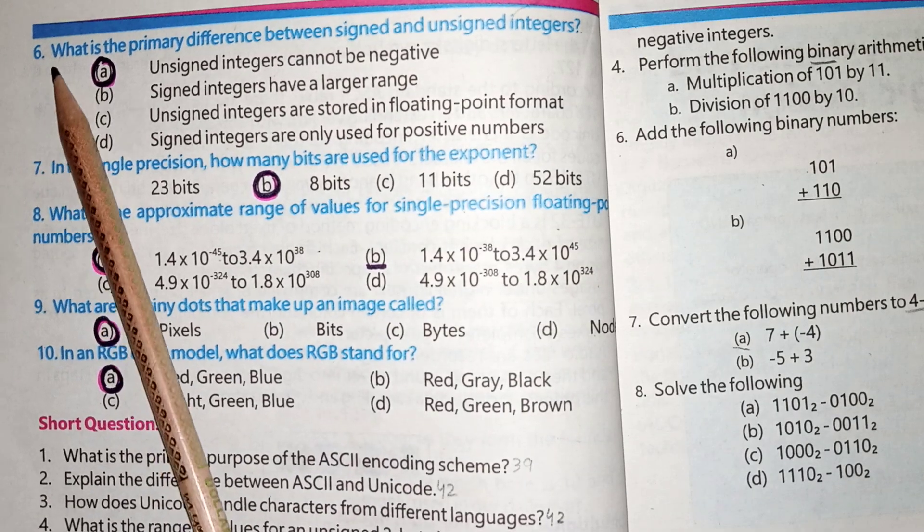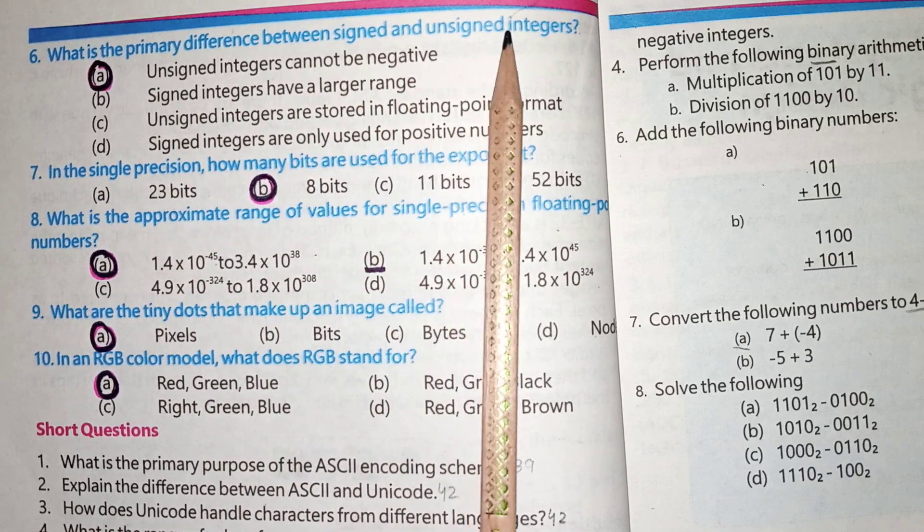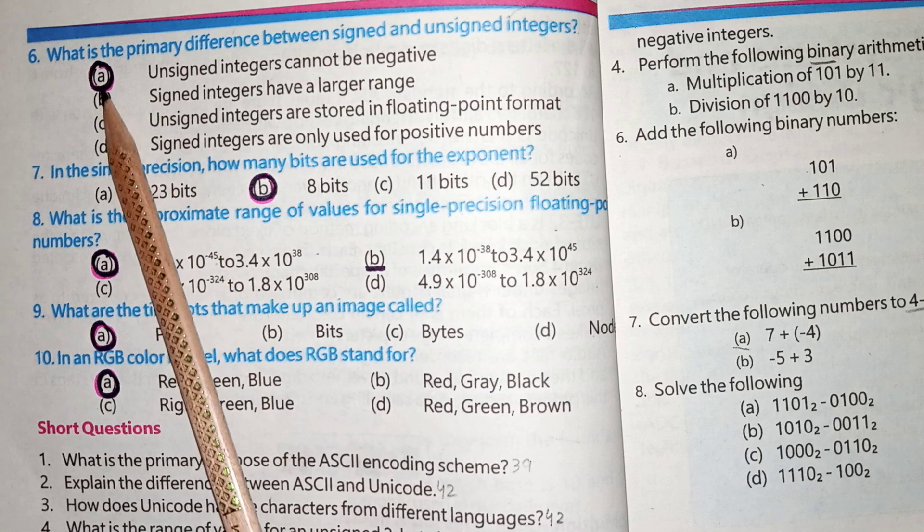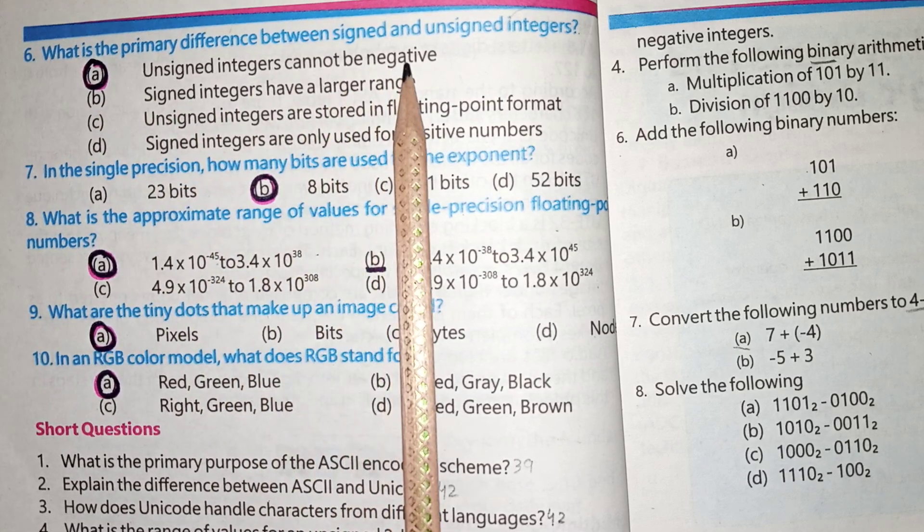Next, MCQs No. 6 is, What is the primary difference between signed and unsigned integers? Option A is the correct answer, Unsigned integers cannot be negative.